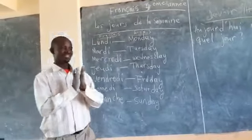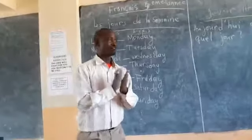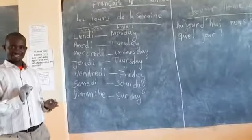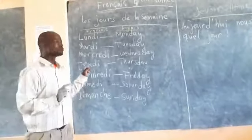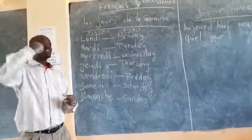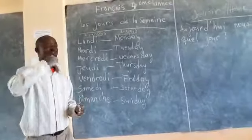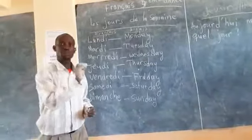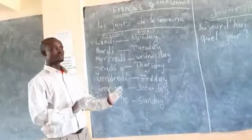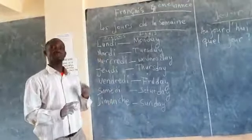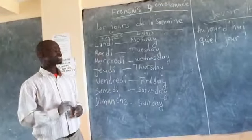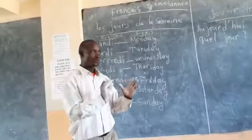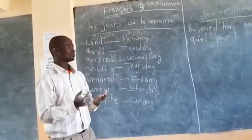Merci beaucoup, bravo! Prononcez avec moi. You make sure you pronounce with me, because you cannot master something or know how to say it if you did not learn how to pronounce it. So you are supposed to pronounce with me, and I hope you did it.